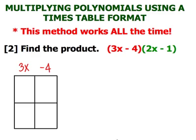Take the second binomial and now write it vertically. The first term, 2x. Second term, minus 1.